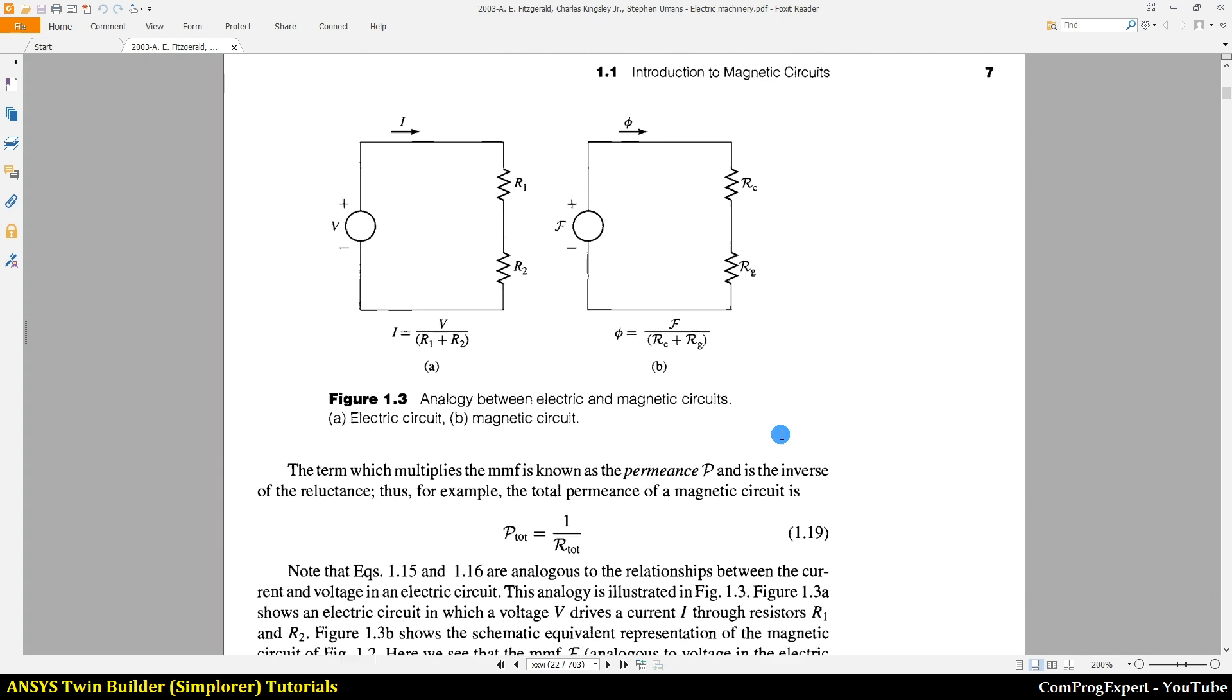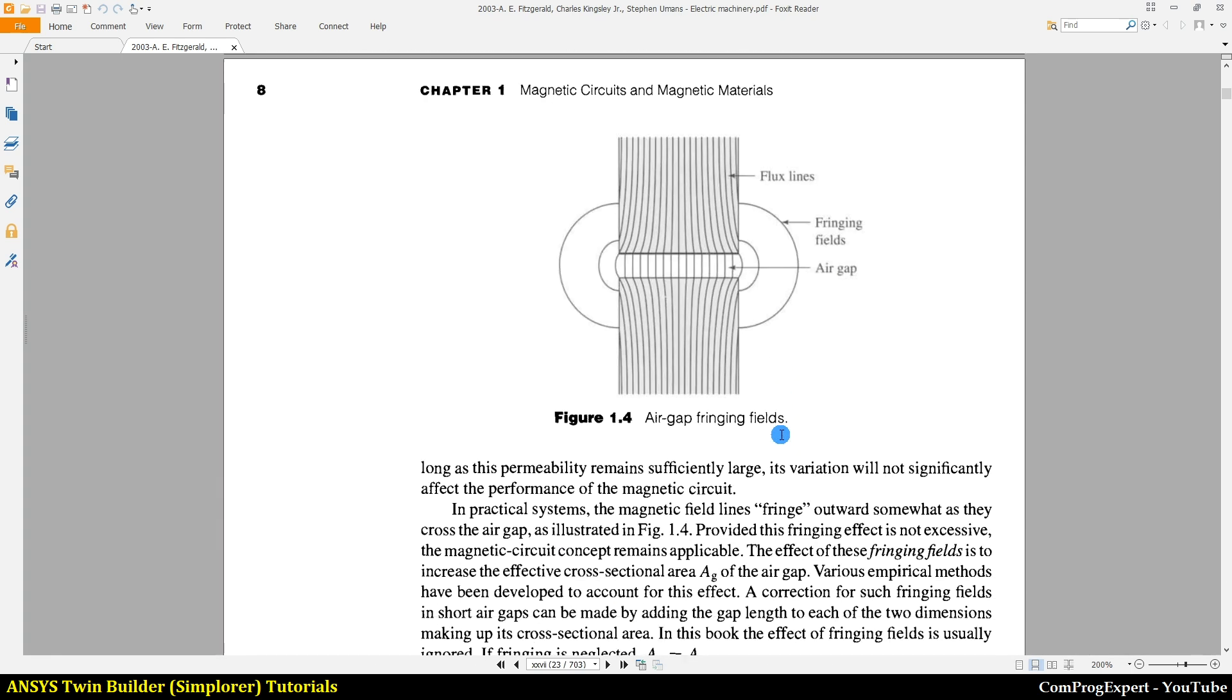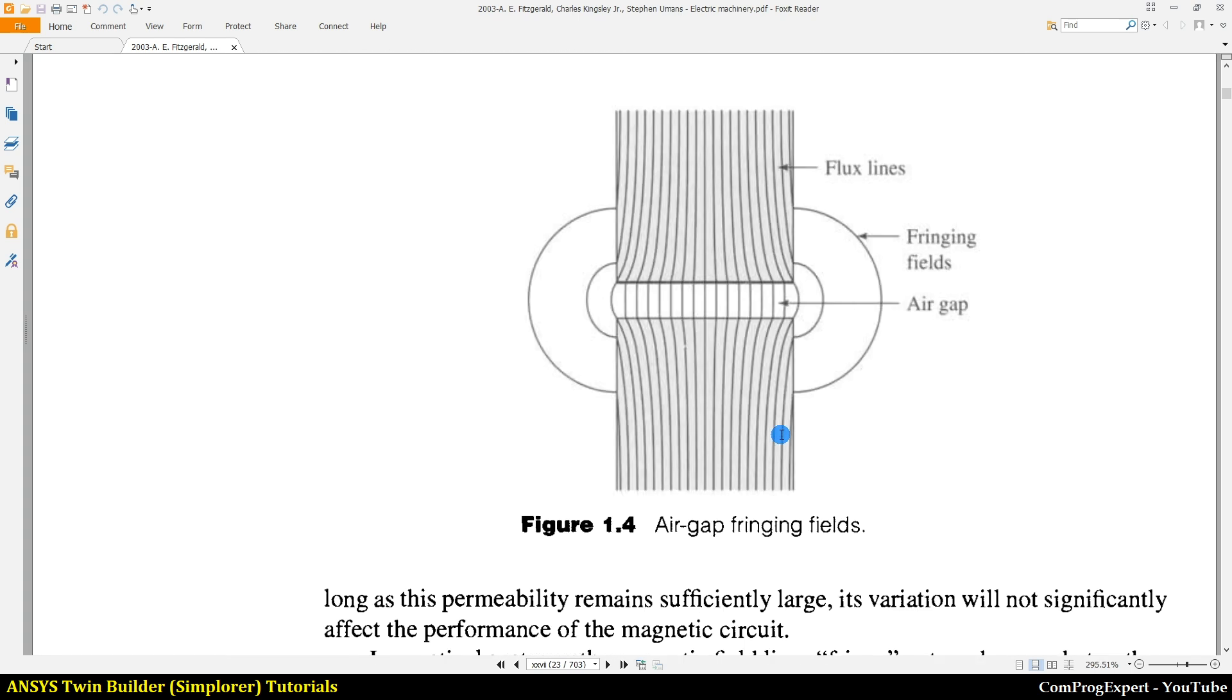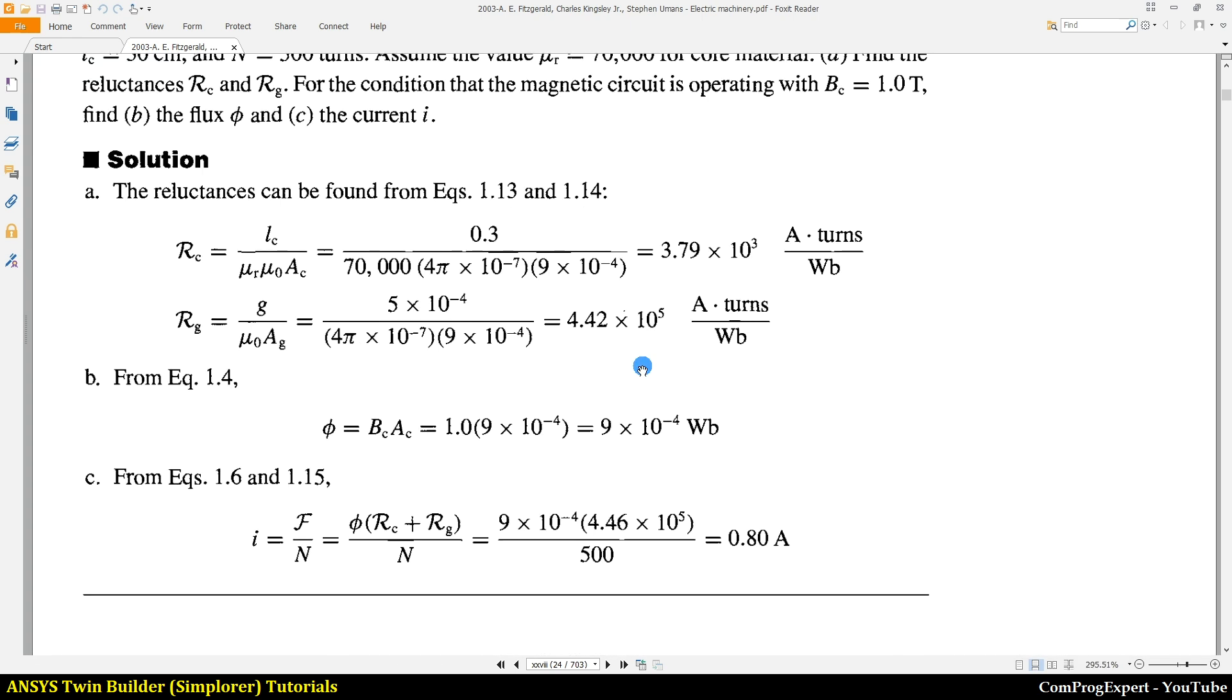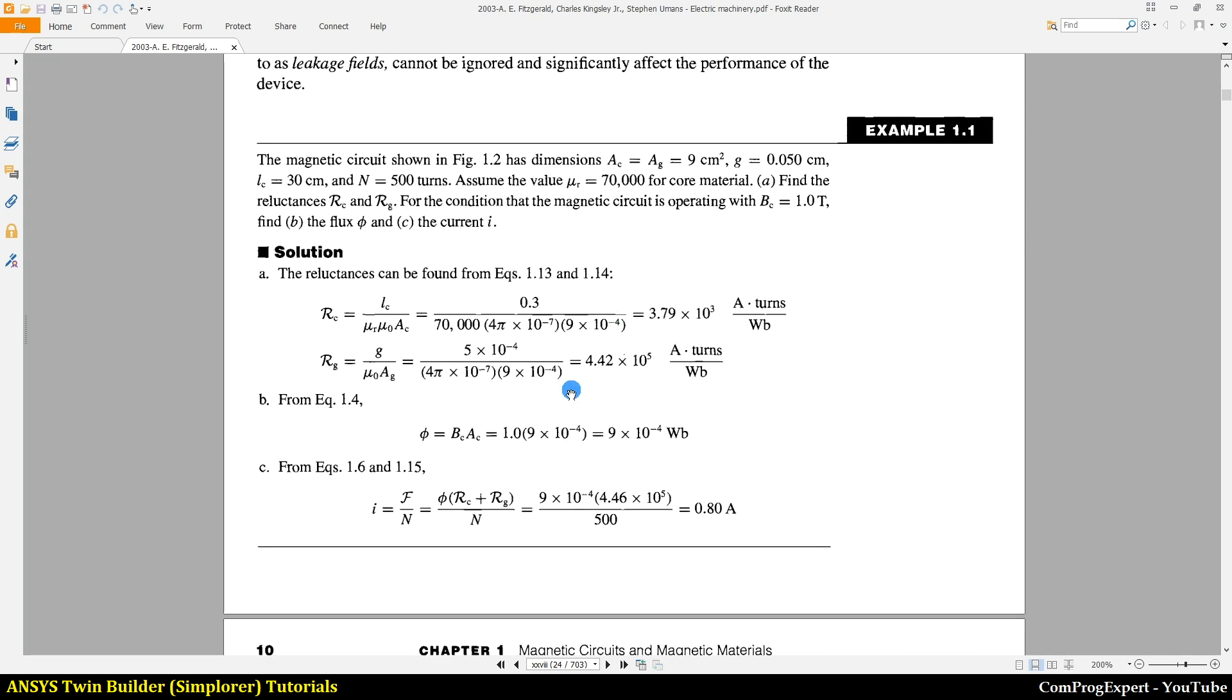So here, let's use these numbers. Also, you are familiar with the fringing effect and the cross sectional area of the air gap is higher than the core. So I'm going to solve this example using the software and compare the numbers.